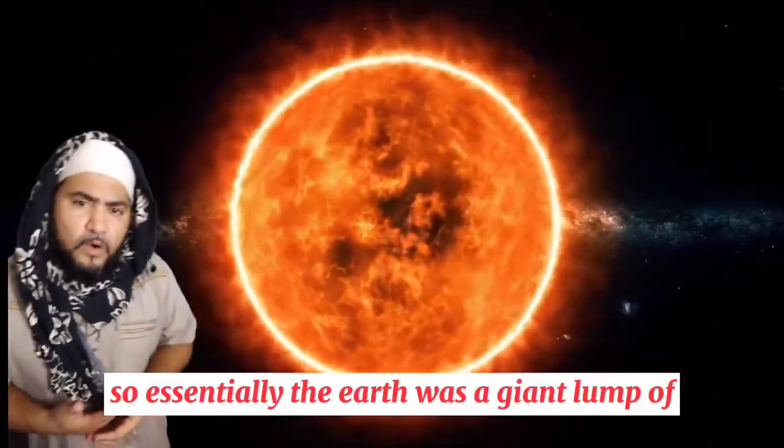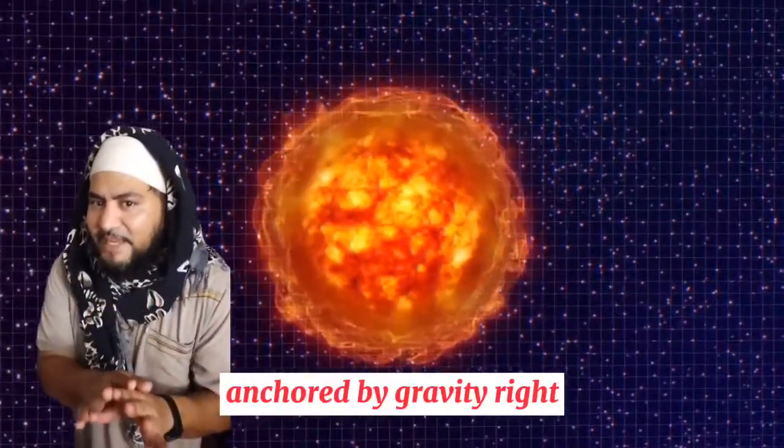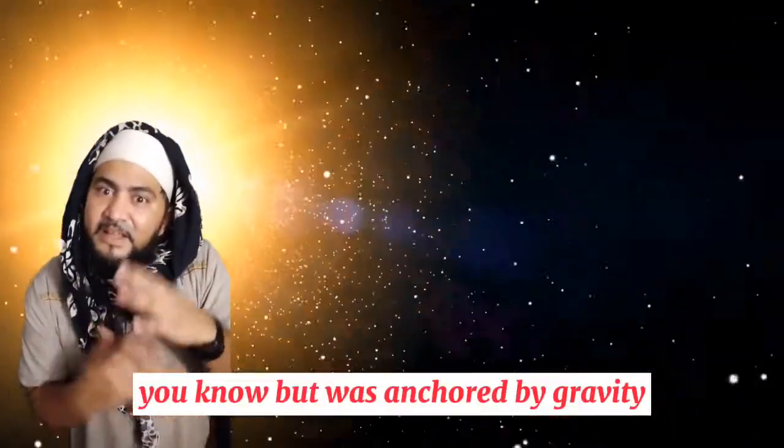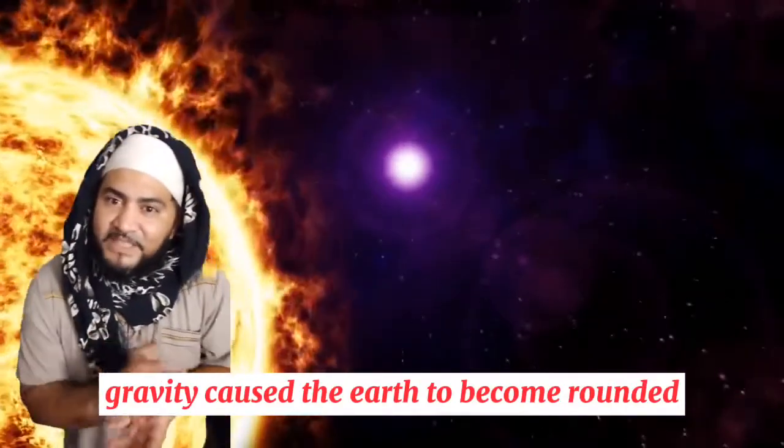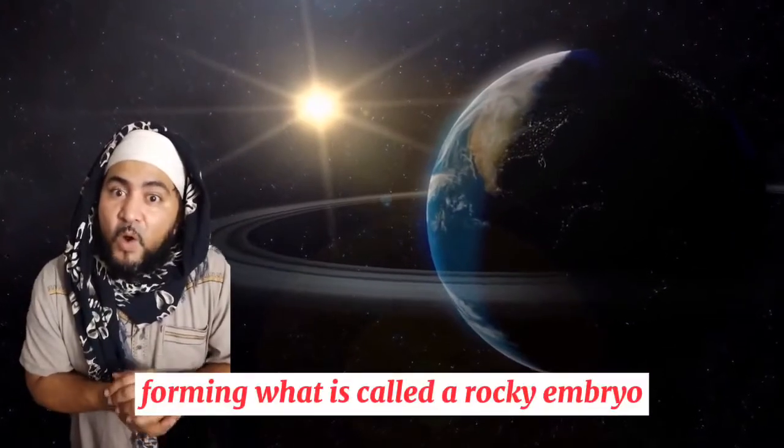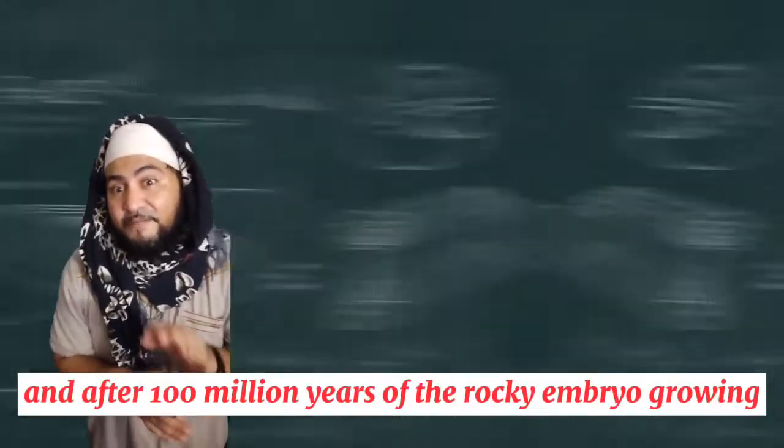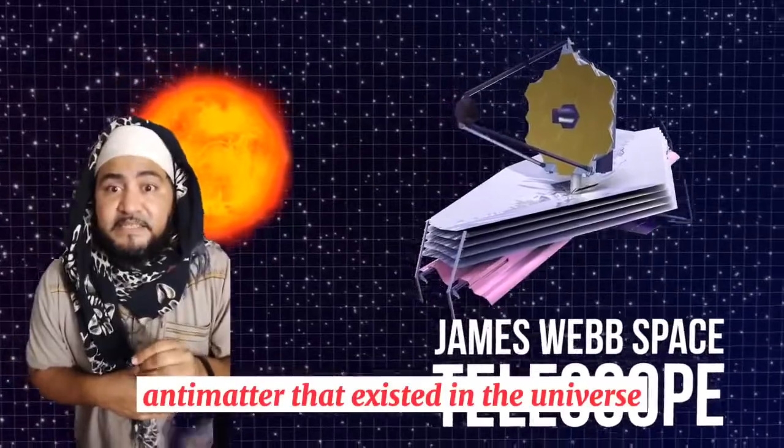So essentially, the Earth was a giant lump of this cosmic dust anchored by gravity. It was just cosmic dust, life was anchored by gravity that constantly grew larger and larger and larger. Once it became large enough, gravity caused the Earth to become rounded, forming what is called a rocky embryo. And after a hundred million years of the rocky embryo growing, Voila, we have planet Earth.